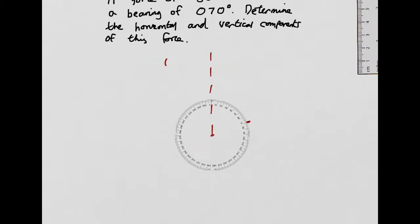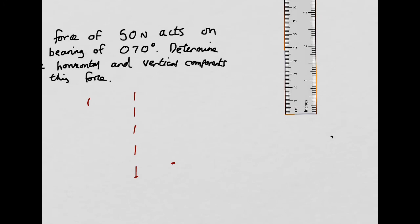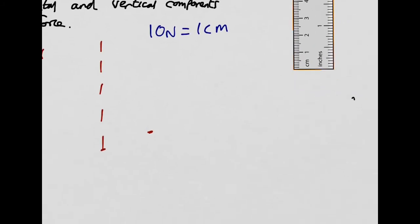Now we need to put 50 newtons on. We need to do this to scale. Let's remove this, let's get rid of the protractor for now. To do it to scale then we need to select a sensible scale. I'm going to say for a sensible reasonable scale, we're going to say every 10 newtons is equal to 1 centimeter. So that can be my scale. Let's move the ruler in and we can draw this force in.